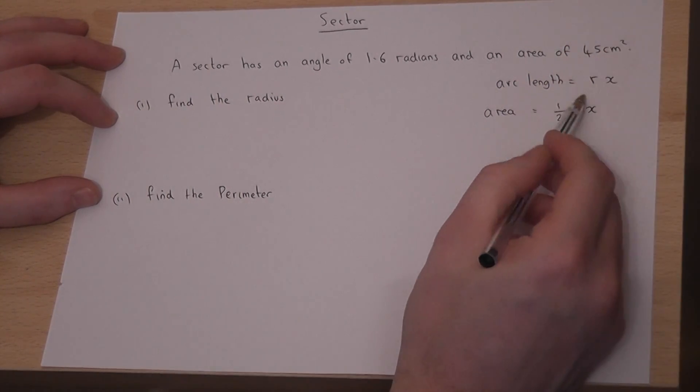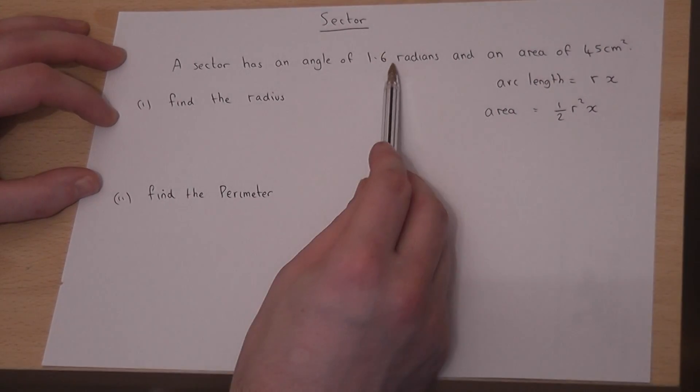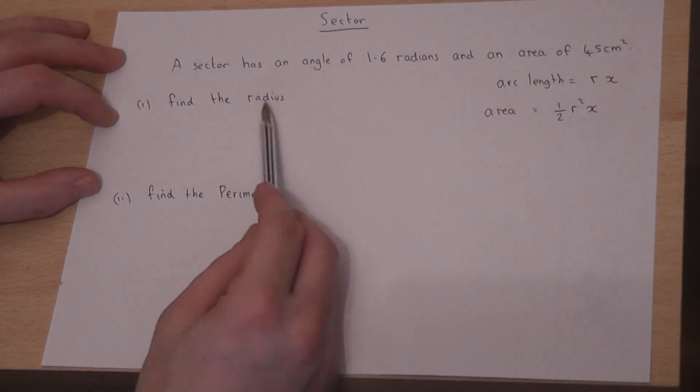So r is the radius and x is the angle. In this question we know the angle and the area, and the question is: what's the radius?